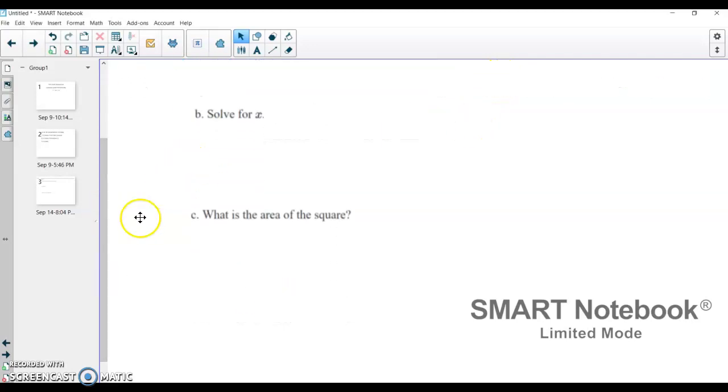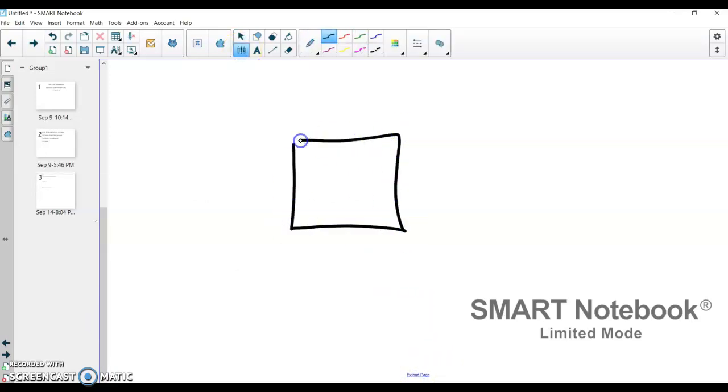The best thing to do in this problem is to draw it out to help visualize what's happening here. So I'm going to draw out a square, and I know that the side length is 5 times x plus 2, and I also know that it's a square, so all the side lengths are the same, meaning this is 5 times x plus 2, this is 5 times x plus 2, and this one also is.